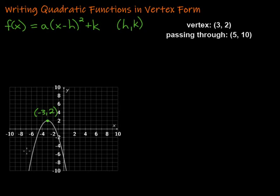Then we need another point that's on the graph — that's just going to be an x and a y. If we look at our graph here, we can go down along, and it looks like this point right here is on the graph as well. That would be located at negative 5, negative 2.